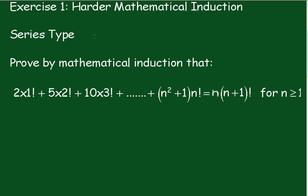Exercise 1: Harder Mathematical Induction, Series Type. Prove by Mathematical Induction that 2·1! + 5·2! + ... + (n²+1)·n! = n·(n+1)!, for n greater than or equal to 1.